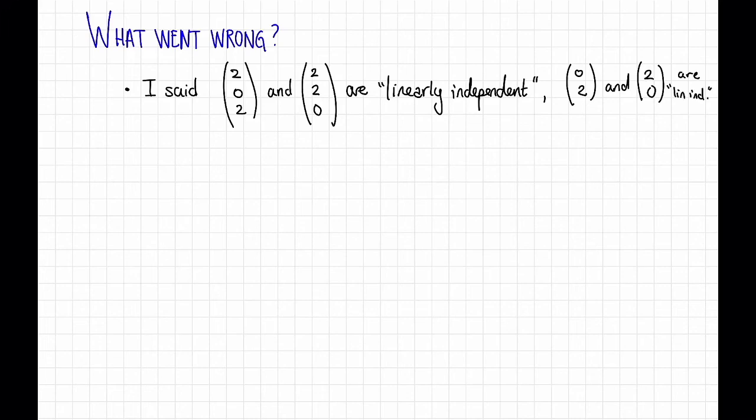Okay, so what's going on here? So perhaps you saw this as I was walking through the argument. I said a number of false things or things that didn't really make sense. The main thing I said that didn't make sense was that I asserted that certain vectors were linearly independent.